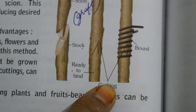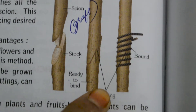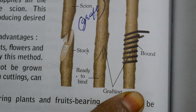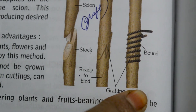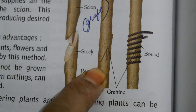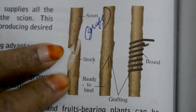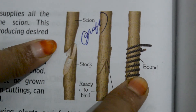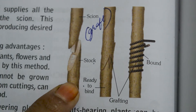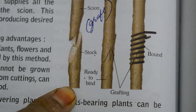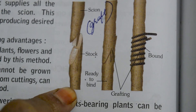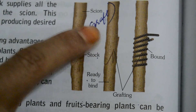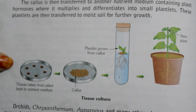In grafting, the plants chosen should have an incision made on the stem, cut in a particular pattern so that each part fits into the other. They are fixed and tied together so that they grow as a single plant. The plant which has its own root system is called the stock plant, and the other plant chosen for grafting is called the graft or scion.